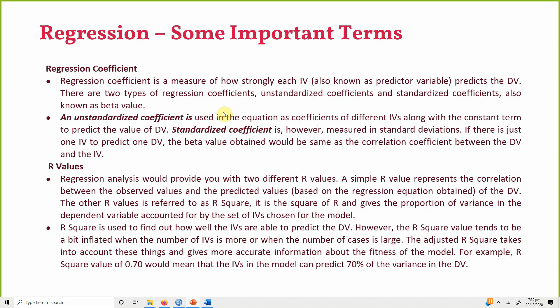There are two types of regression coefficients. The unstandardized coefficient is used in the equation as the coefficient of different independent variables along with the constant term. The standardized coefficient, however, is measured in standard deviations.